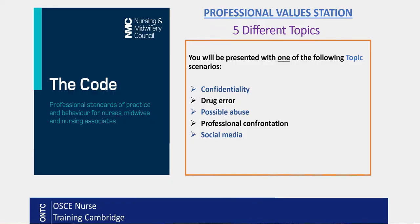The five topics that can come up around professional behaviors are: first, patient confidentiality; second, drug error; third, possible abuse — so safeguarding adults; fourth, professional conduct, which nurses can come across quite a lot in practice; and fifth, a very hot topic — social media use for nurses, where we always have to be very careful as professionals about how we present ourselves.